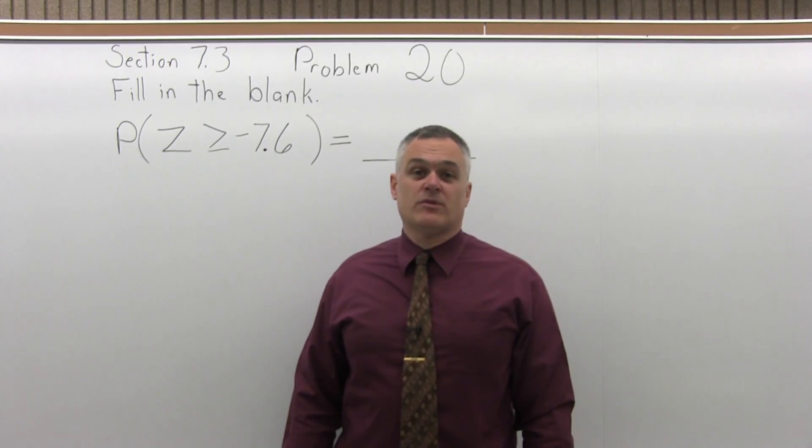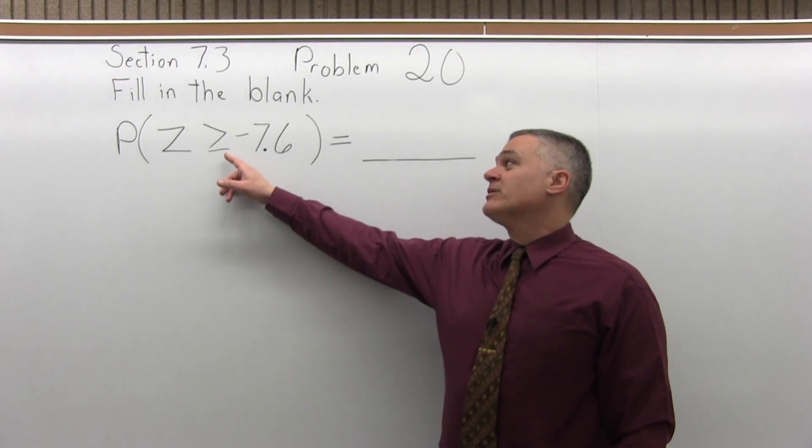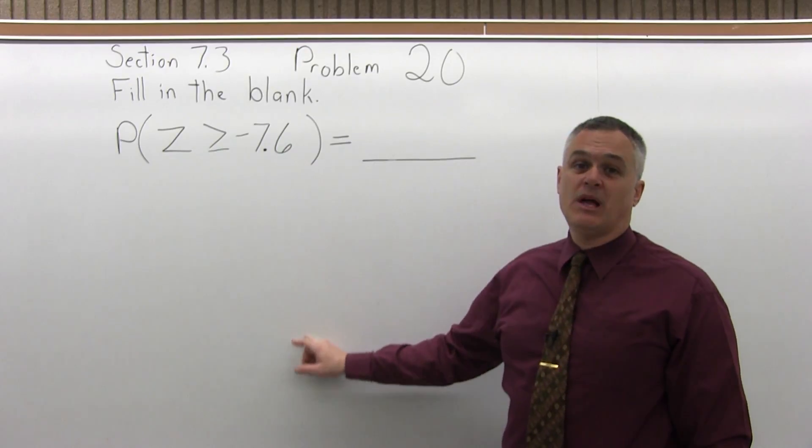This is Section 7.3, Problem number 20. It says fill in the blank: the probability that Z is greater than or equal to negative 7.6 equals blank.